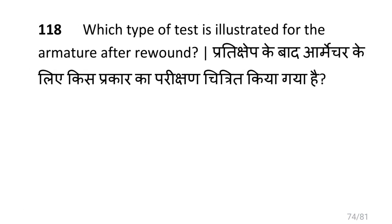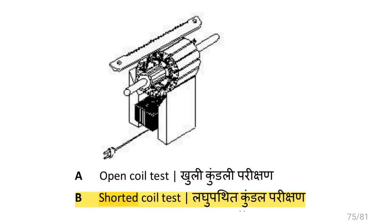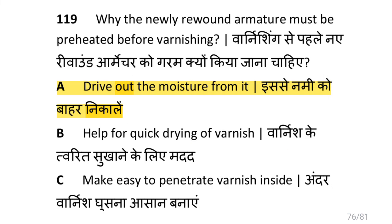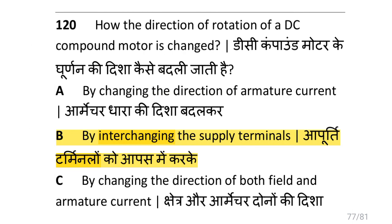Which type of test is illustrated for the armature after rewinding? That is shorted coil test. Why must the newly rewound armature be preheated before varnishing? To dry out the moisture from it. How is the direction of rotation of a DC compound motor changed? By changing the direction of armature current.